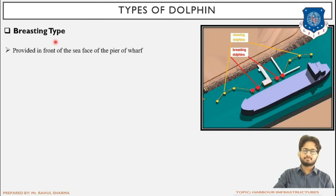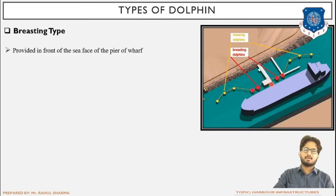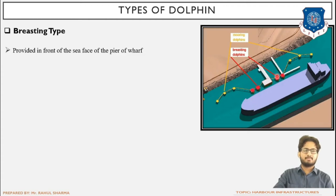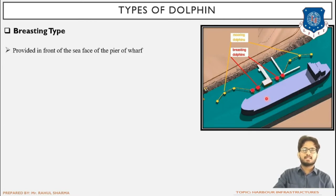Resting dolphins are provided in front of the sea face of the pier or wharf — in the front face. The similarity between mooring and resting dolphins is their purpose: tying up the ship. The difference is that resting dolphins are at the front, adjacent to the ship, while mooring dolphins are behind. Another difference is dimensions — resting dolphins have larger dimensions compared to mooring dolphins.